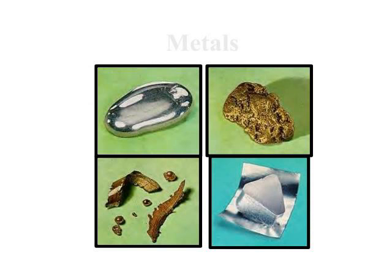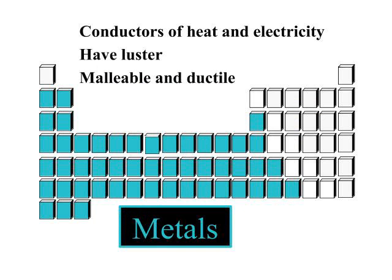Let's talk first very basically about properties of metals. You certainly have properties of metals in your everyday life. You know that they have luster — they shine — they are good conductors of heat and electricity, they are malleable, which means they can be hammered or bent, and they are ductile, which means they can be drawn into wires.